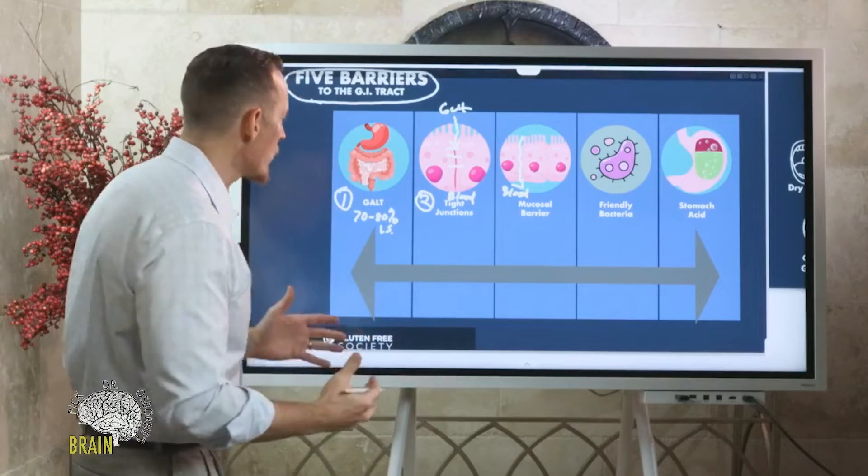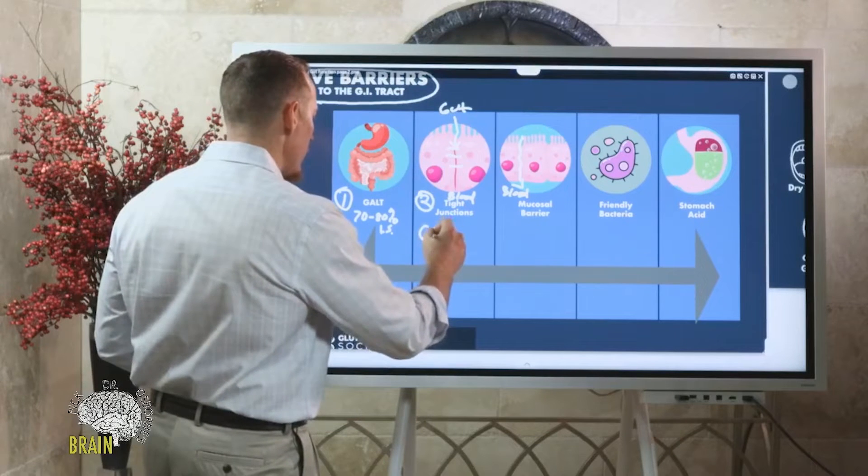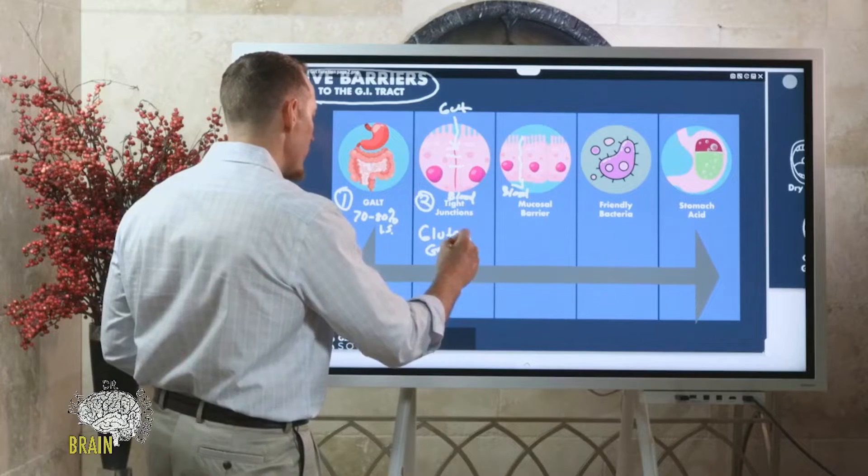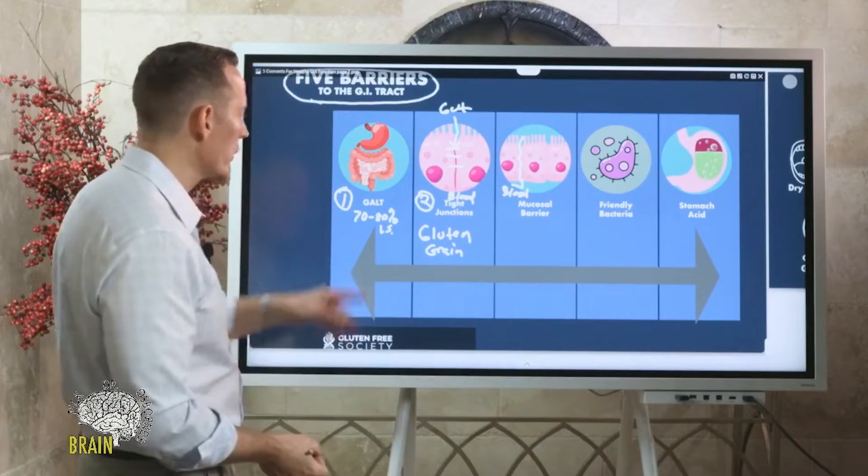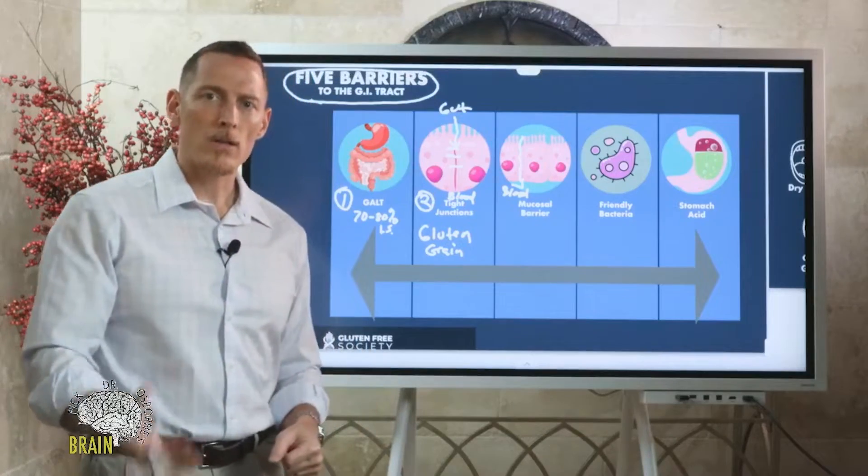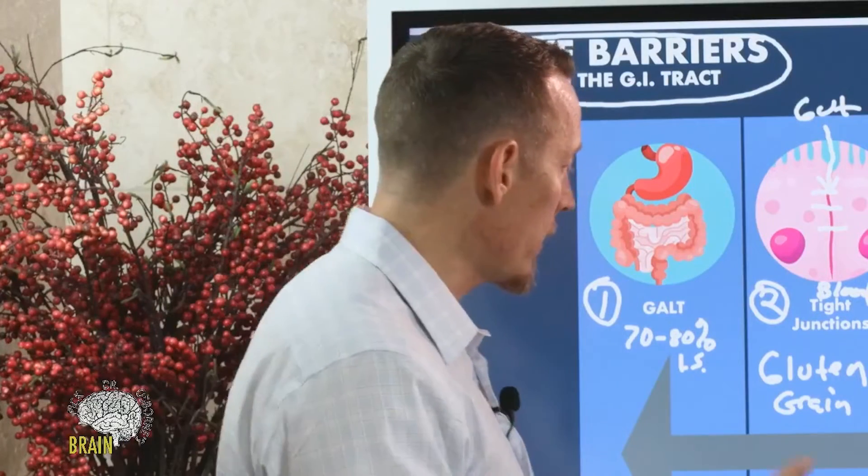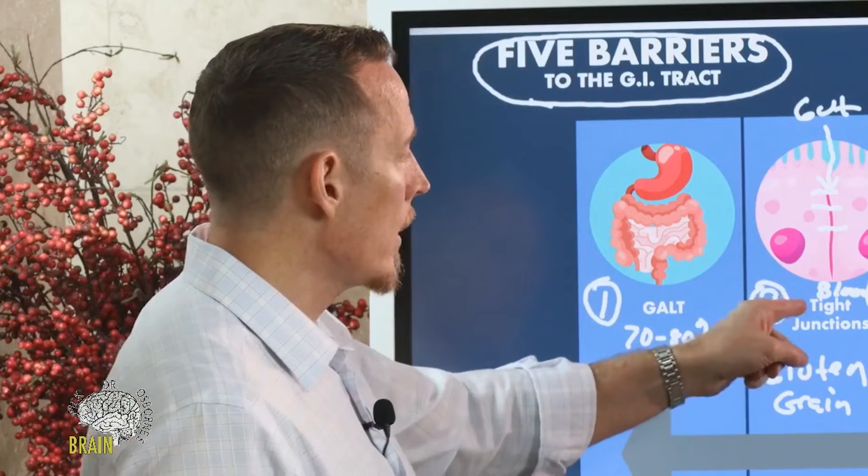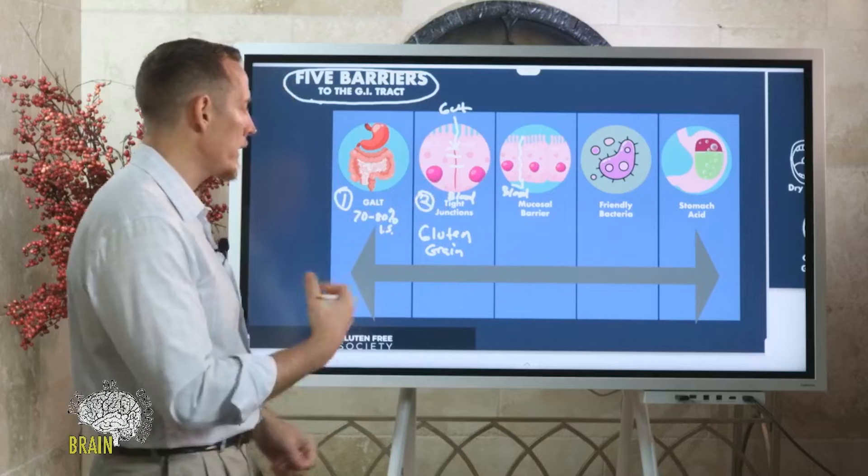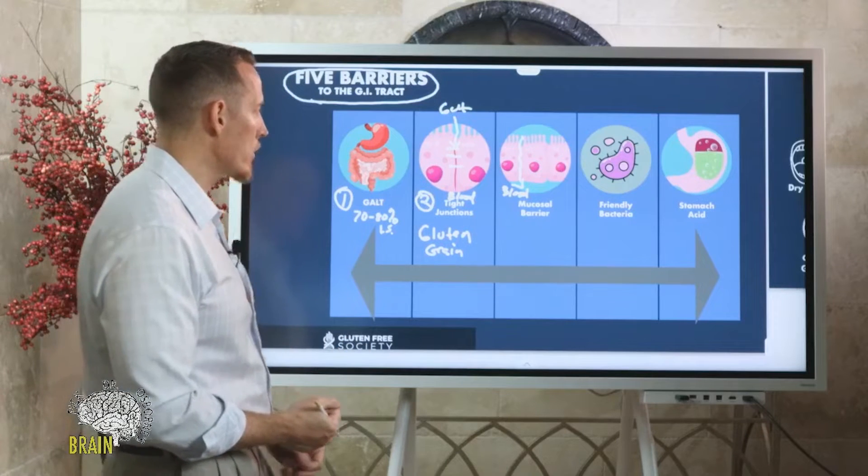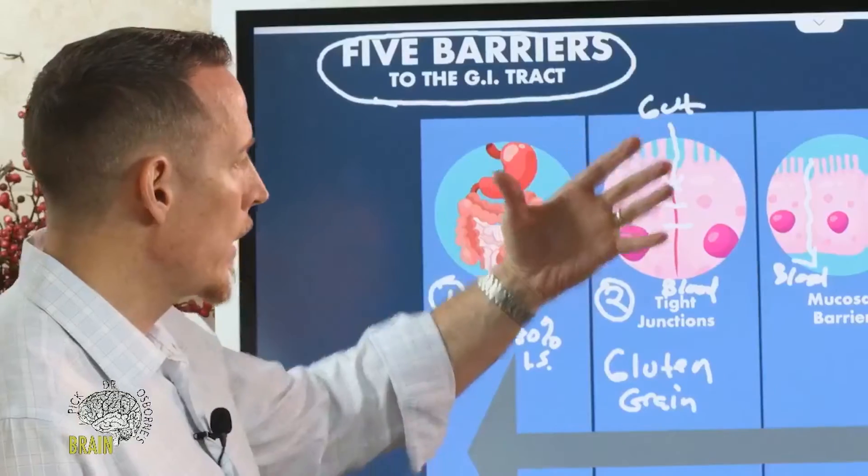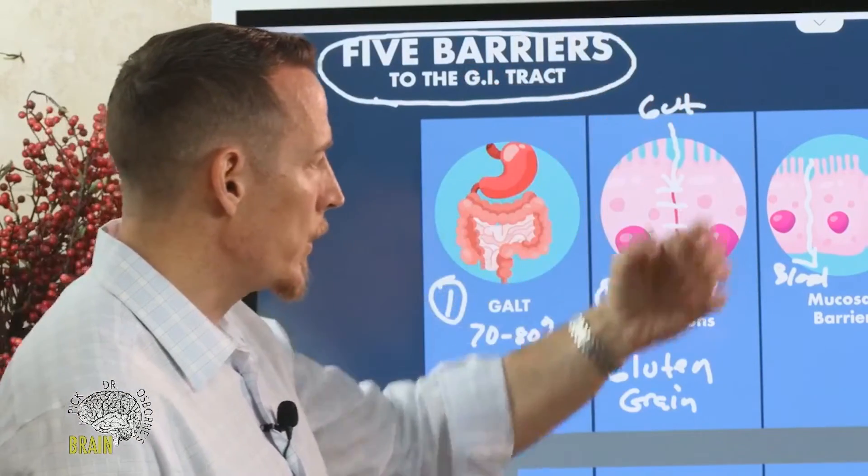When they hit your bloodstream, that's systemic inflammation. These tight junctions are very important. This is one of the reasons why we focus so heavily on a gluten-grain-free diet. It's been very well established that gluten, even in people that are not celiac, causes a disruption of these tight junctions. We don't want a disruption in those tight junctions that allows all kinds of garbage to leak through from your poop into your blood.